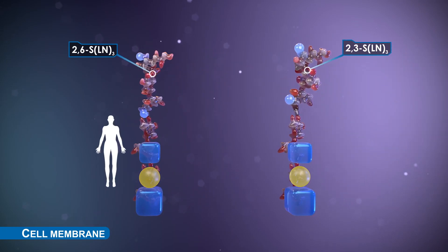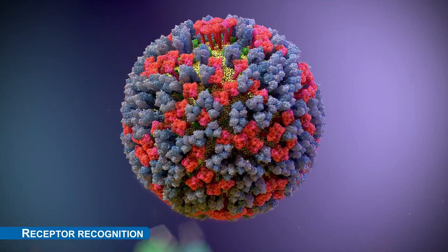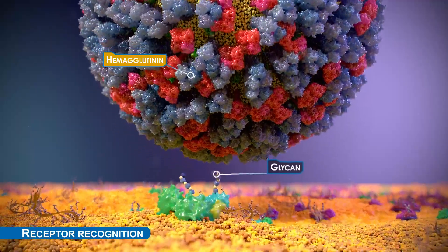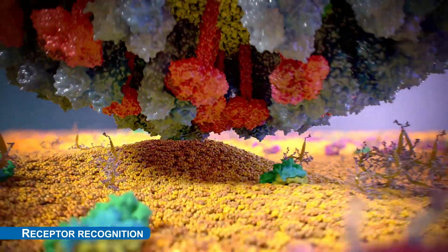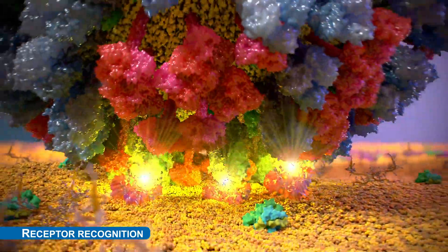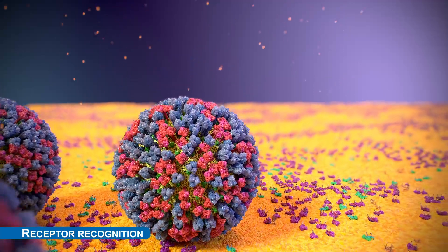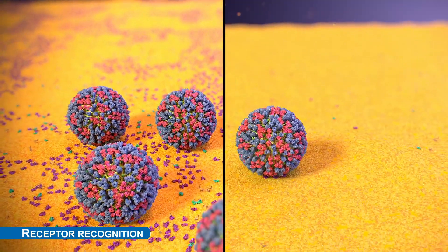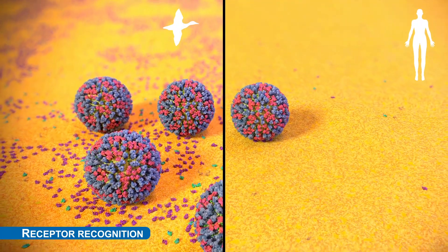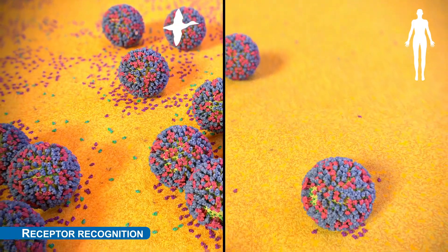The receptor structure in humans is different from birds. One key point where viruses adapt is receptor recognition. The virus needs to bind multiple glycans to remain bound. The density at which a virus can form enough interactions depends on the structure of the glycans. This receptor density may differ between different cells and tissues of the same host, and between different host species.